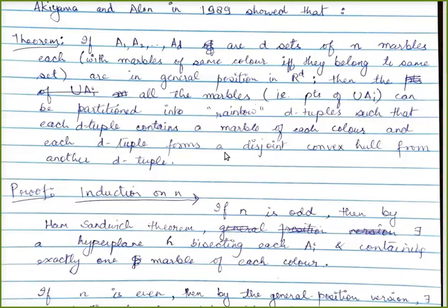Furthermore, each D-tuple is going to form a convex hull which is disjoint from the convex hull formed by any other D-tuple. So if you have two D-tuples — two tuples of D elements, with the first element from A_1, the i-th element from A_i — then the convex hull of the first D-tuple is disjoint from the convex hull of the second. You can always partition the union of all A_i into such rainbow D-tuples.